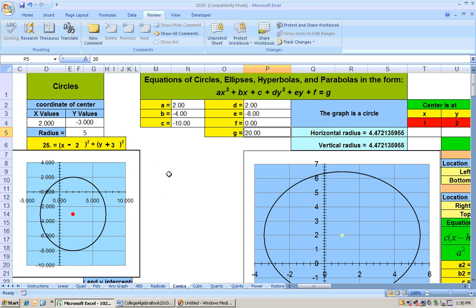So I'm on the conic sheet, and you put in your coefficients. Remember they have to be in this format right here. So it would be 2 for the a, -4 for the b, the c is -10, then the d is 2. The e is -8. I have no other constant on the left-hand side, so I'll let the f be 0, and on the right-hand side I had a 20.